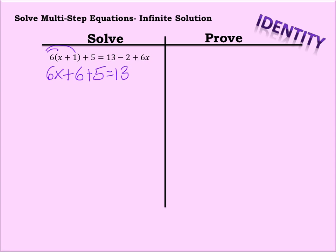And we just want to get all of the like terms together that we can on each side of the equal sign before we start doing our inverse operations. So we do have some constants here on the left as well as on the right. So let's combine those.